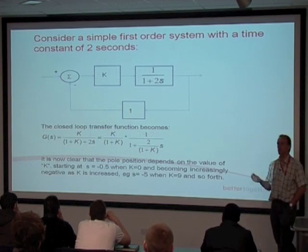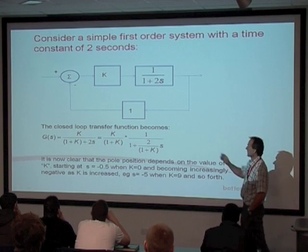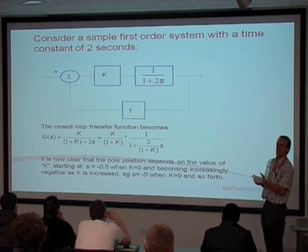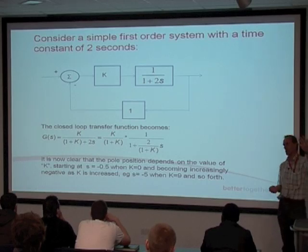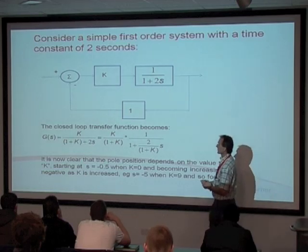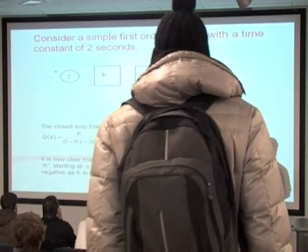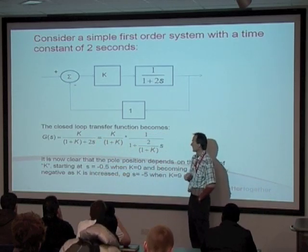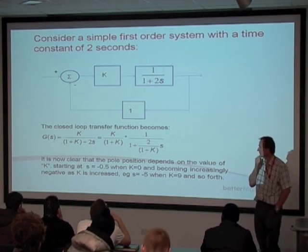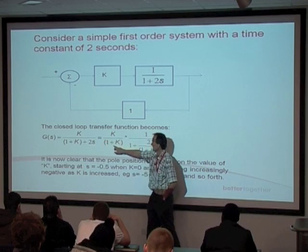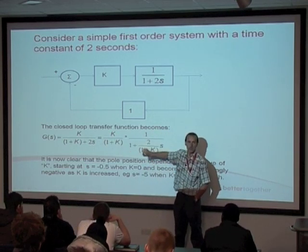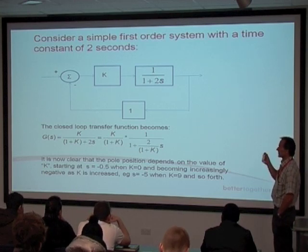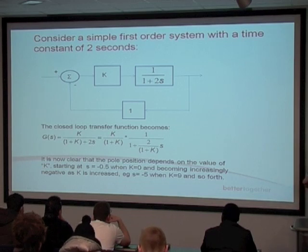But what happens when we put that into a closed-loop feedback system? That forward path is still my first-order system with the variable gain, but it now forms part of a closed-loop system. Using block diagram algebra, the closed-loop transfer function is G over 1 plus GH. Simplifying into standard form, I end up with a gain quantity and a first-order lag. When we introduce this gain into the closed-loop system, it doesn't behave in quite the way we'd expect.